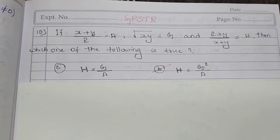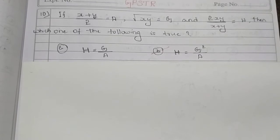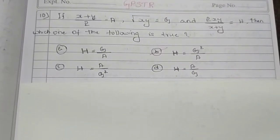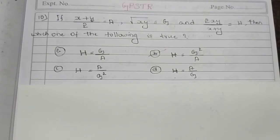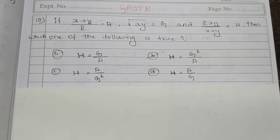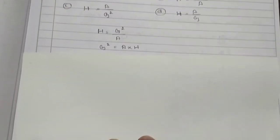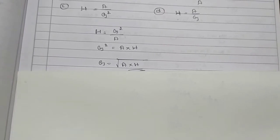The options are: Option A — h is equal to g by a; Option B — h is equal to g square by a; Option C — h is equal to a by g square; Option D — h is equal to a by g. The correct answer is Option B: H is equal to G square by A. Looking at the relation, H equals G² by A, which means G² equals A into H, so G equals square root of A into H.